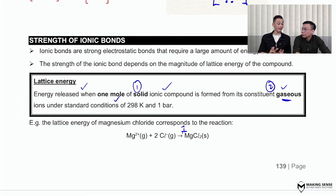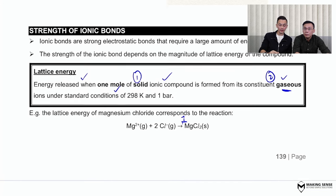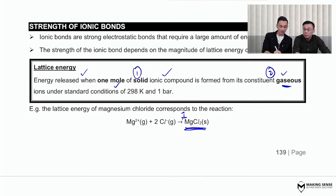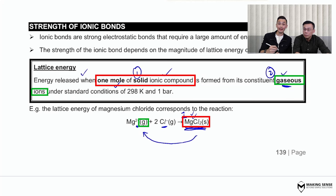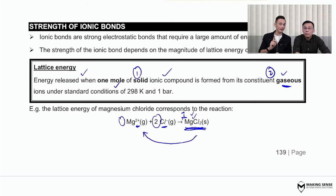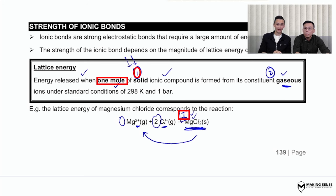For the lattice energy equation of magnesium chloride, you always write it based on the definition. Keep one mole of ionic compound — MgCl₂(s) — and work backwards: magnesium is a metal, so it forms Mg²⁺(g) cations; chlorine forms Cl⁻(g) anions. Balance the coefficients — but the key intention is to keep one mole of ionic compound. For iron(III) oxide, similarly write one mole of Fe₂O₃(s), with Fe³⁺(g) and O²⁻(g), then balance with coefficients two and three.